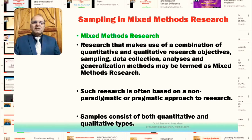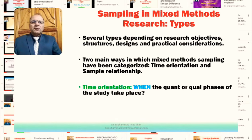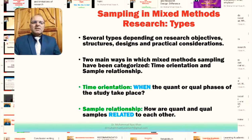In some cases, the paradigm in which mixed method research falls is called the third paradigm. The samples in mixed methods consist of both quantitative and qualitative types. There are several types of mixed method research samples and these types depend on research objectives, the structures or designs of our research studies, or other practical considerations. Two main ways in which mixed method samples have been categorized include categorization based on time orientation and categorization based on sample relationship.